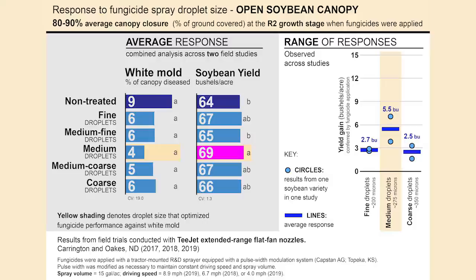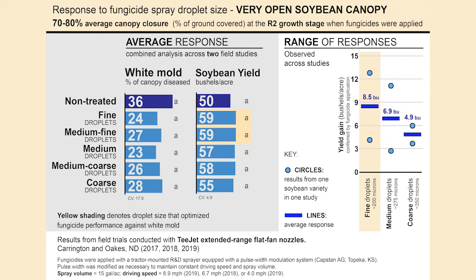What we have learned is the following. When the canopy is open — there's still ground showing between the rows when the soybeans are at full R2 growth stage — we have optimized the performance of fungicides by applying with fine to medium droplets, just like the standard recommendation. This is with T-Jet tips. When the canopy has been wide open, the optimal droplet size has been on the boundary of fine and medium — fine but on the coarser end of fine, or medium but on the finer end of medium. That's when the canopy closure has averaged across the footprint of the entire study less than 80%.